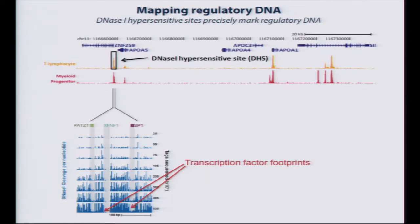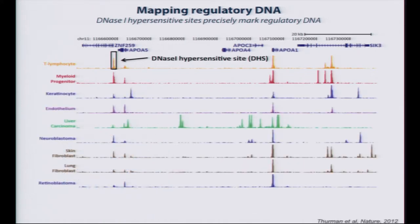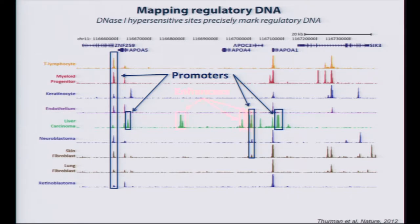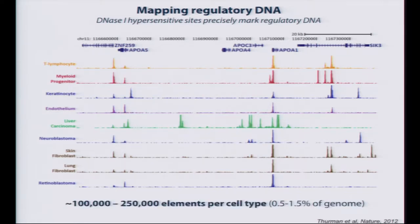More broadly, applying this across various cell types, you can map the promoters and enhancers. A good number to keep in your head is that there are roughly 100,000 to 250,000 DNase I hypersensitive sites detectable in any given cell type — on average about 150,000 elements — and that translates to about 1% of the genome being in that accessible state.